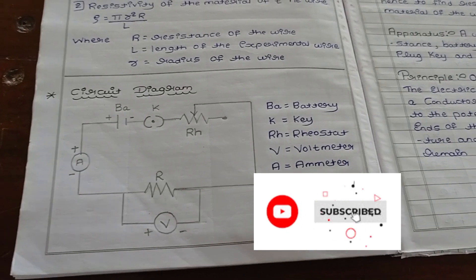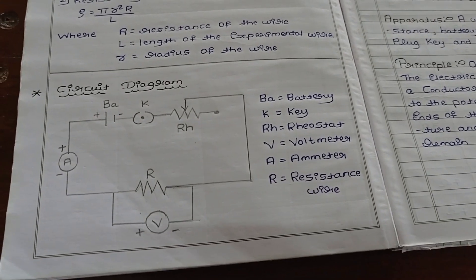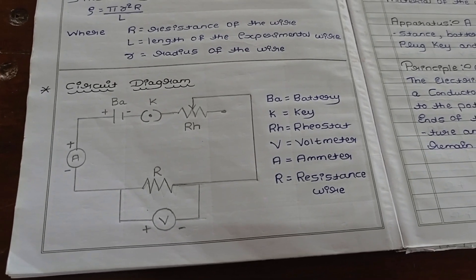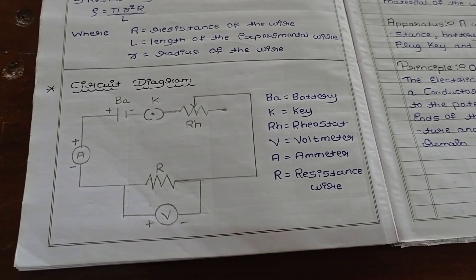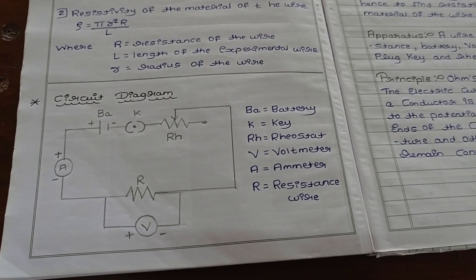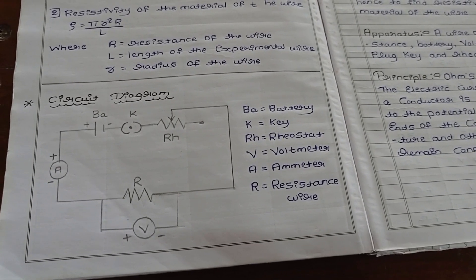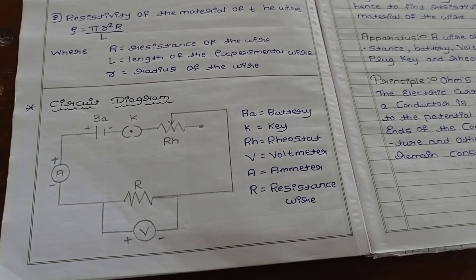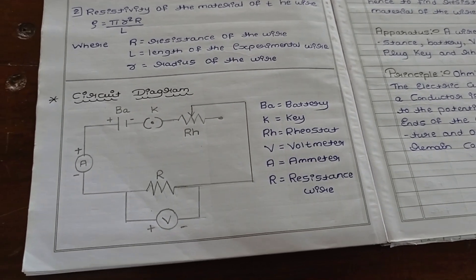Hi everyone. Today I am going to explain about 2nd PVC physics practicals. In that, first I am going to explain about resistivity of the material of the wire. This experiment is based on Ohm's law. You all know about Ohm's law, what is meant by resistance and what is meant by resistivity in our theory classes.